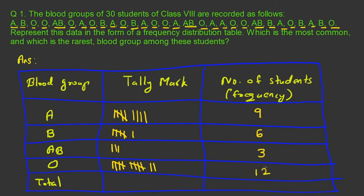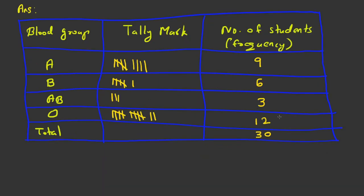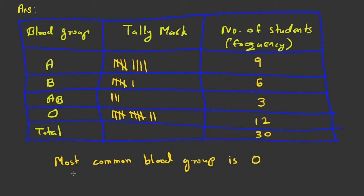For blood group A it is 9, for blood group B it is 6, for blood group AB it is 3, and for blood group O it is 12. The total is 9 + 6 + 3 + 12 = 30. From this table we can easily see that 12 students have blood group O, which is the most common. The rarest blood group is AB, with only 3 students.